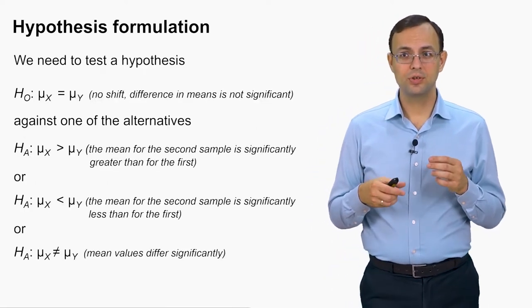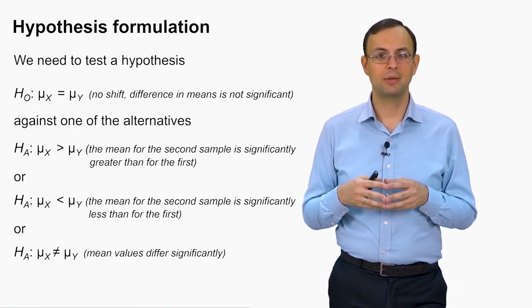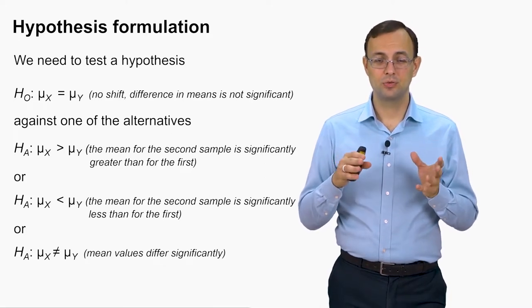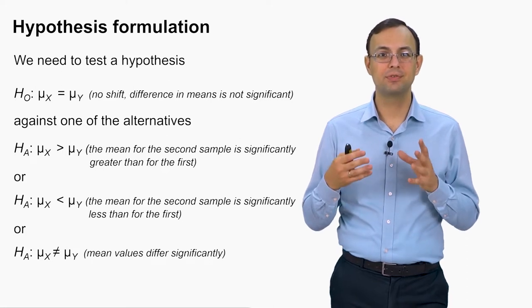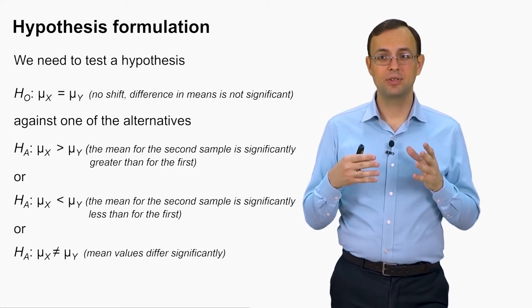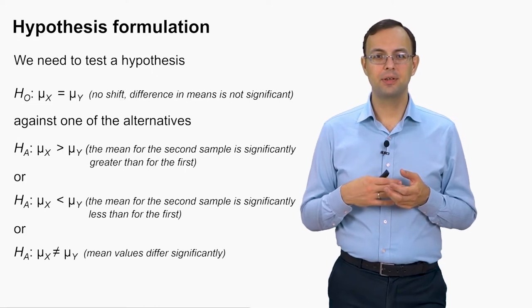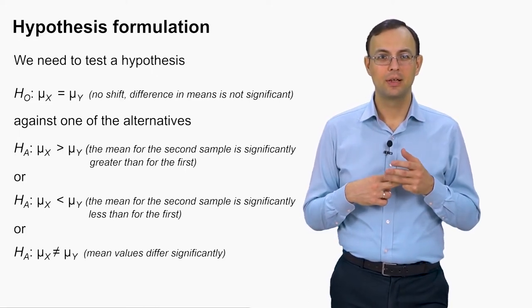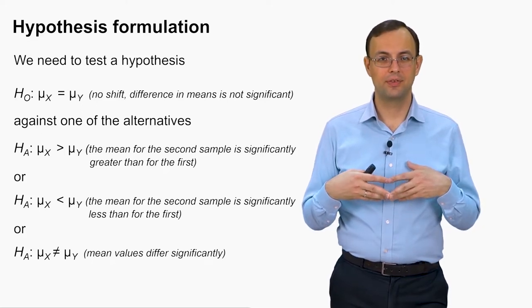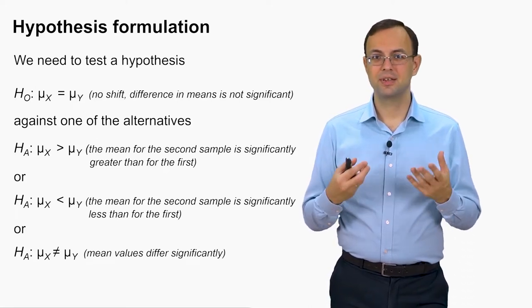The null hypothesis is that there is no difference. Sometimes they say there can be a shift between two samples — the difference between two mean values mu_x and mu_y is sometimes called a shift. So the null hypothesis is that there is no shift, no difference in means, or the difference is not significant. The alternative hypothesis can be one of the following: mu_x greater than mu_y, mu_x less than mu_y, or mu_x not equal to mu_y — meaning the feature increased, decreased, or simply there is a difference.